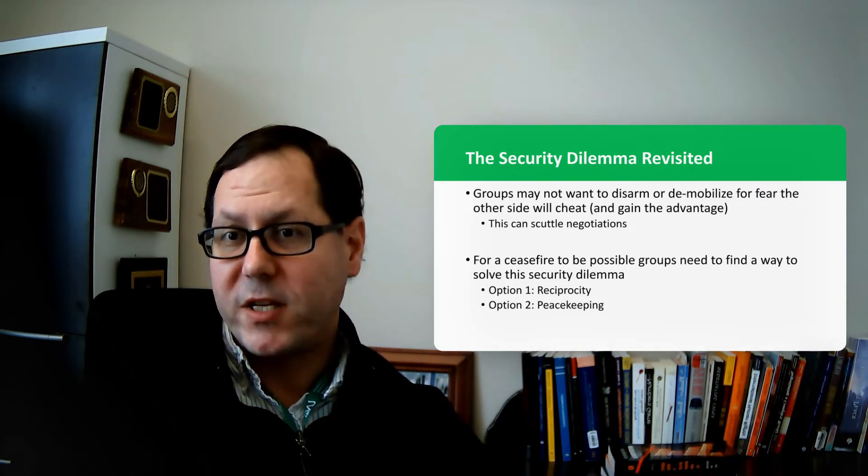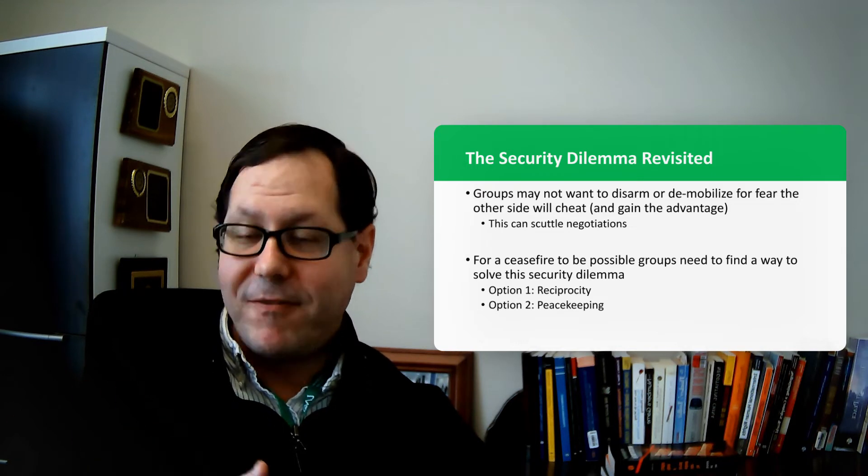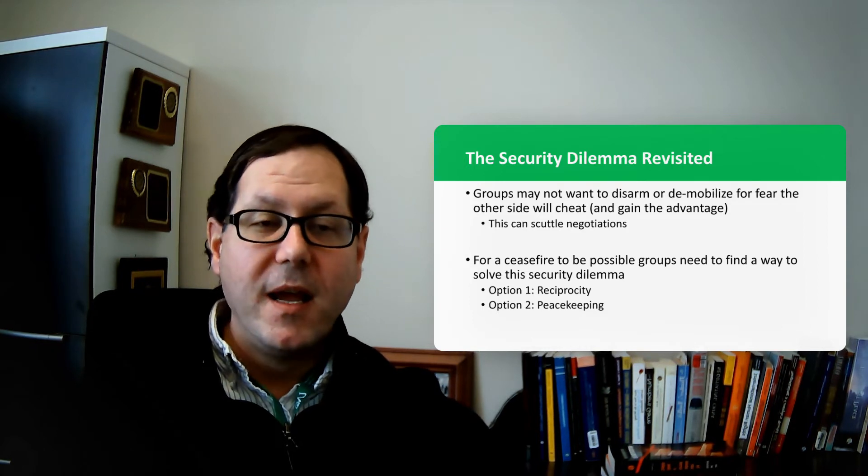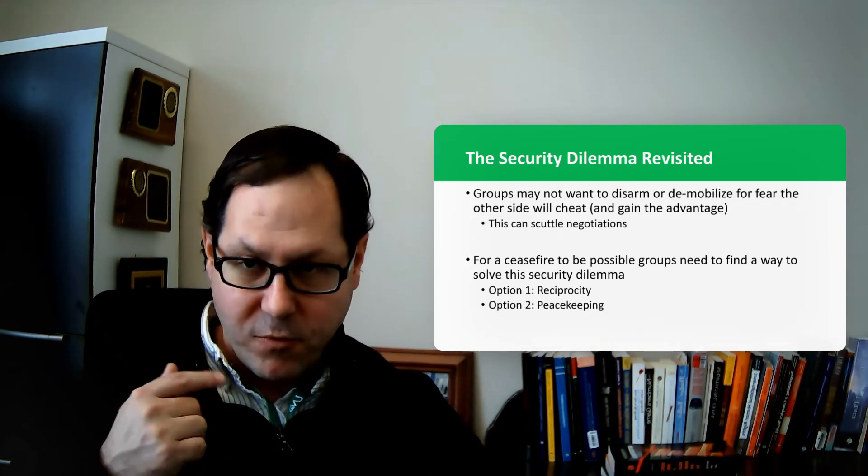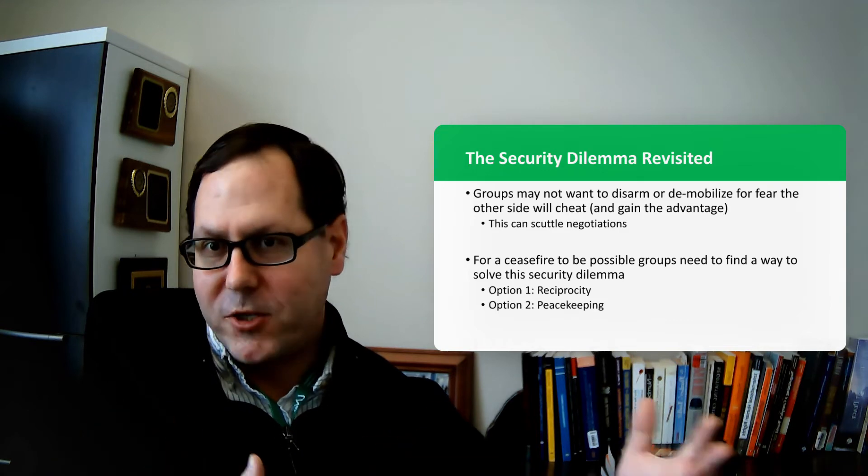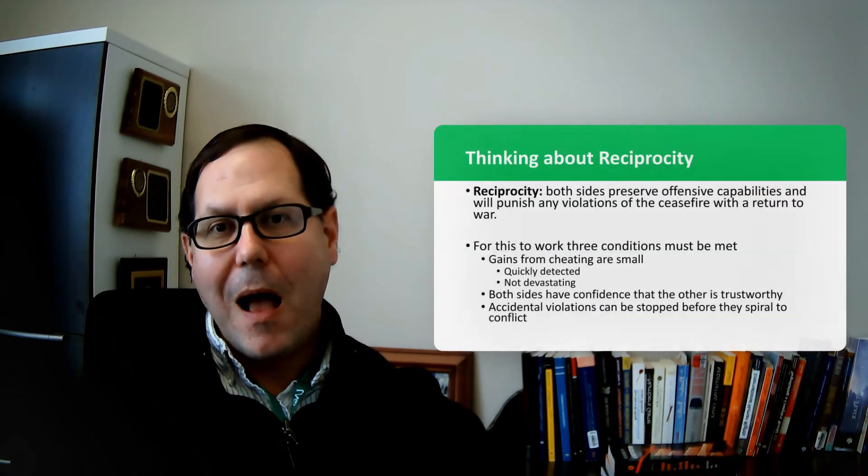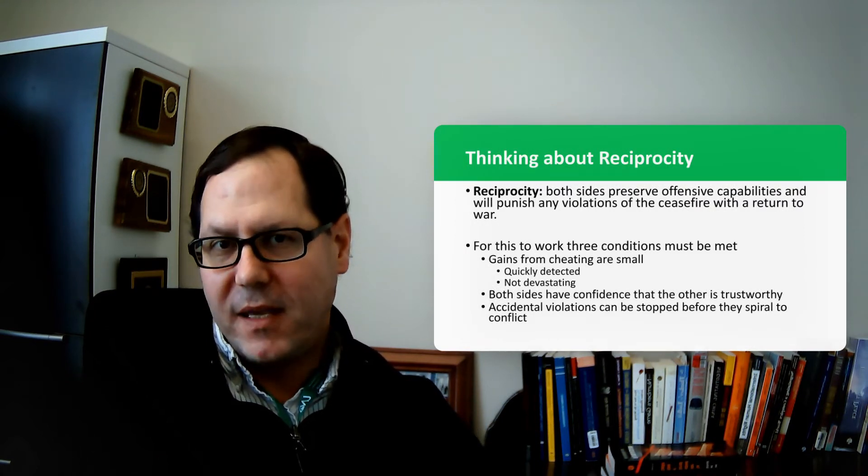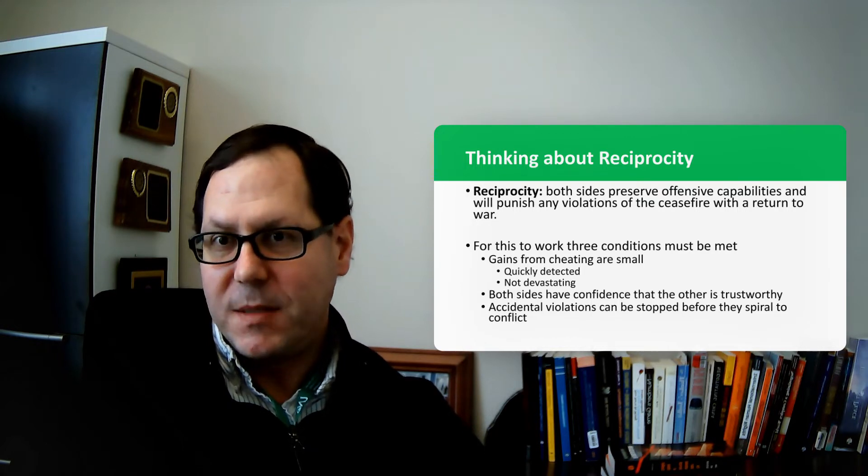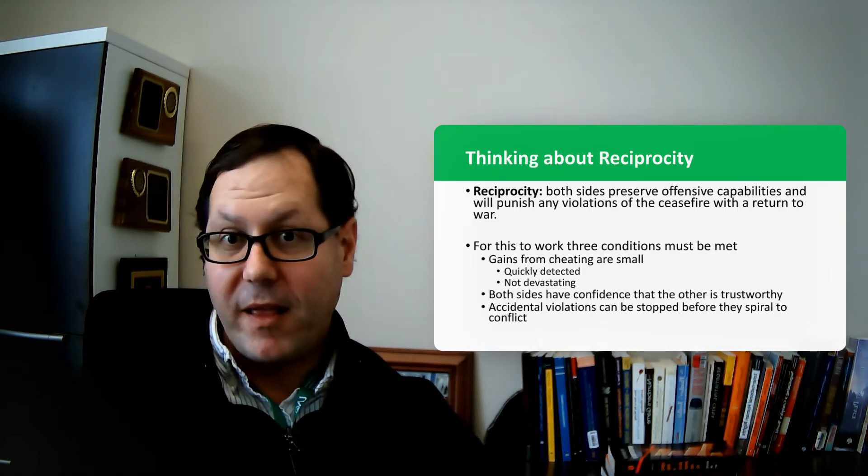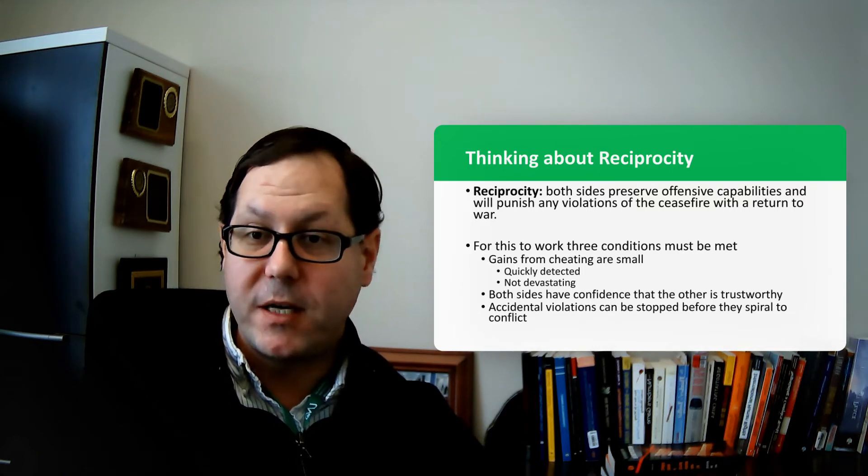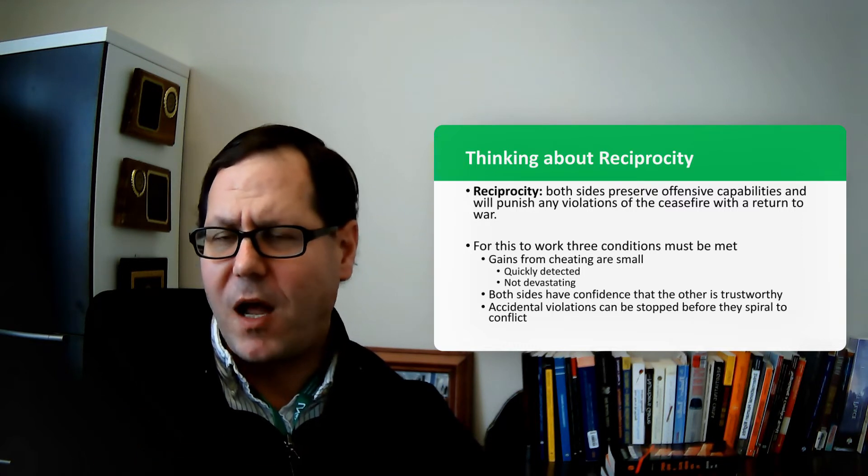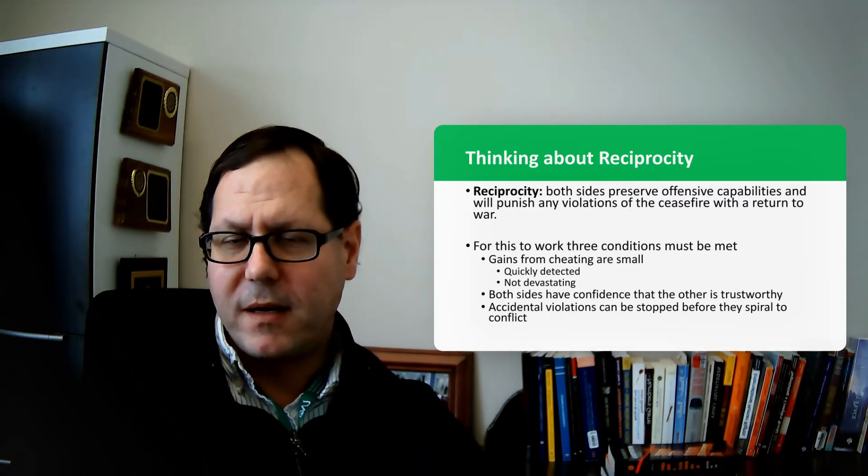So there's a couple ways that we can respond and try to mitigate the security dilemma. One is peacekeeping, but it requires an external actor to come into the situation and help assist and provide some security guarantees and some stability. The other option is reciprocity. This is where you're sort of handling it internally. And if the other side cooperates, you cooperate. And if the other side is defecting, you defect and turn on them as well and return to violence. And then hopefully a pattern of reciprocity will build cooperation and stability over time and will punish defection.